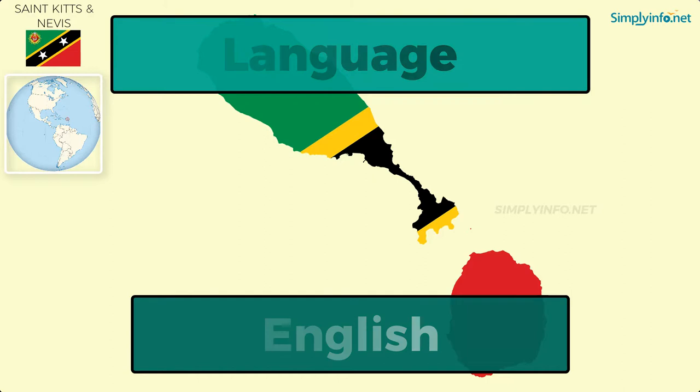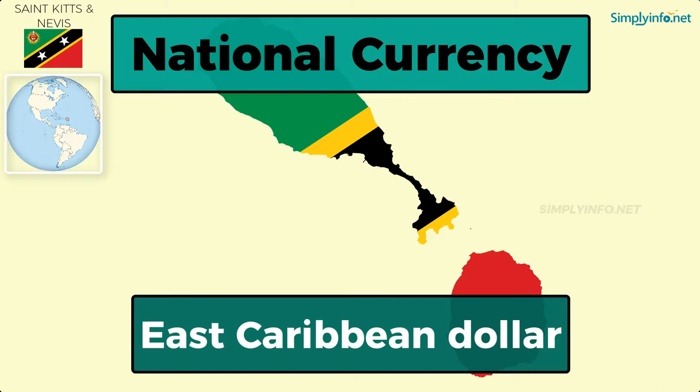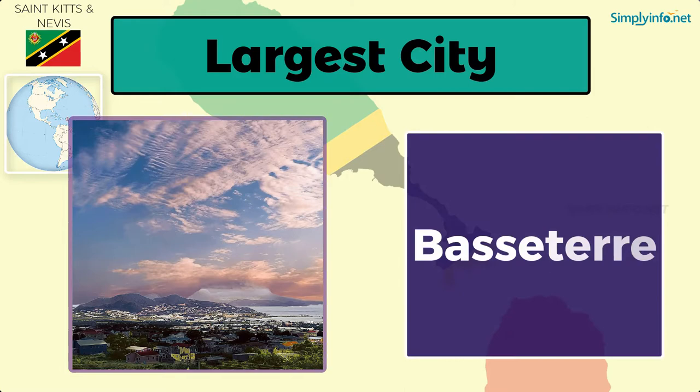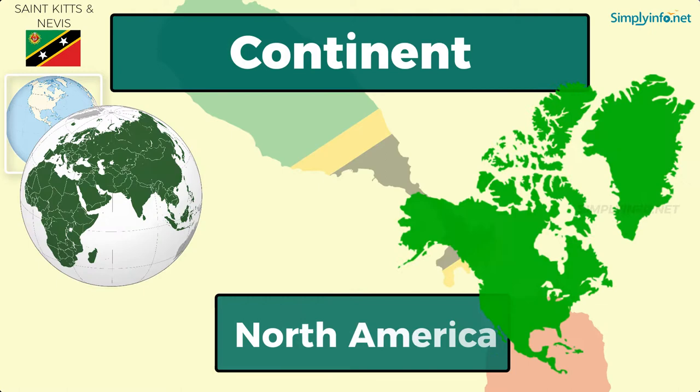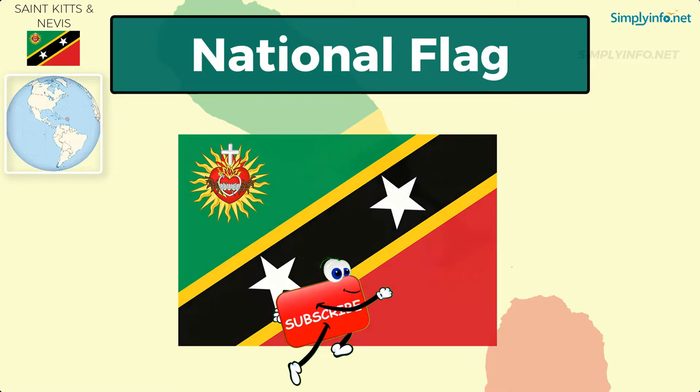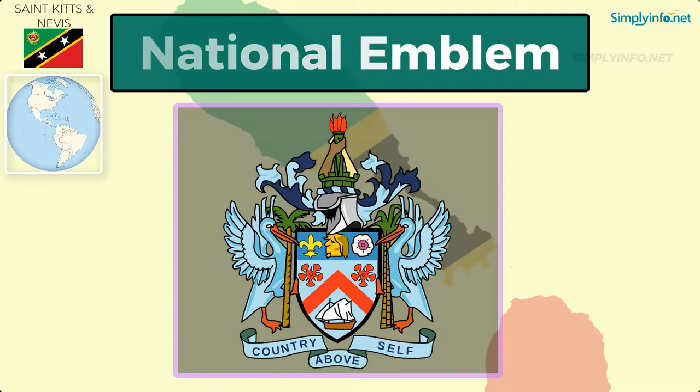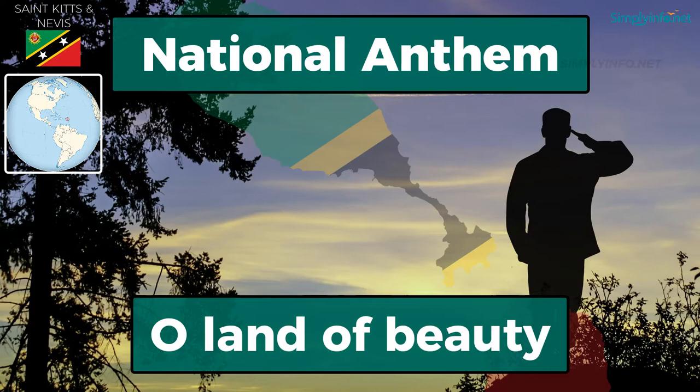National Currency: East Caribbean Dollar. Largest City: Basseterre. Continent: North America. National Flag. National Emblem. National Anthem: O Land of Beauty.